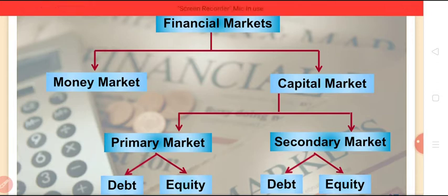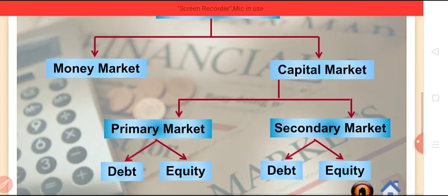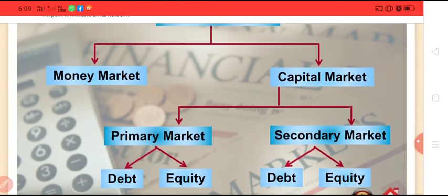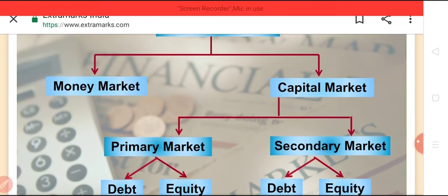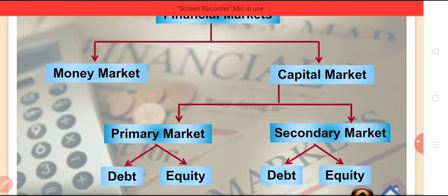Capital market is a determinant of capital formation. How? The activities of capital market determine the rate of capital formation in the economy. Capital market offers attractive opportunities to those who have surplus funds so that they invest more and more in capital market and are encouraged to save more for profitable opportunities.